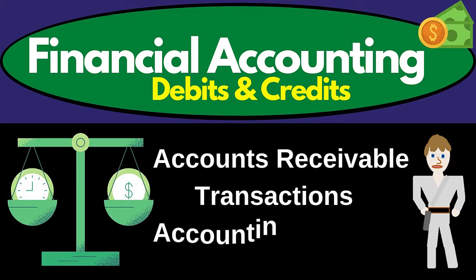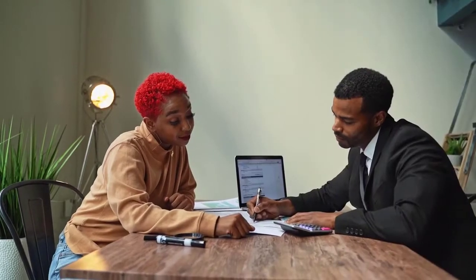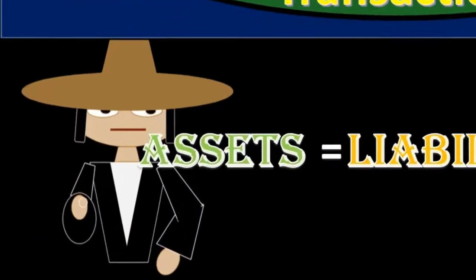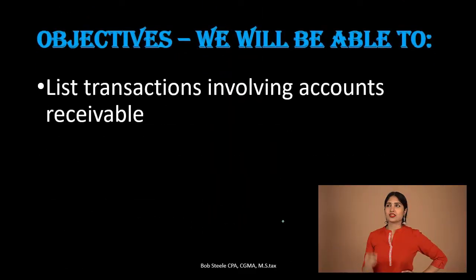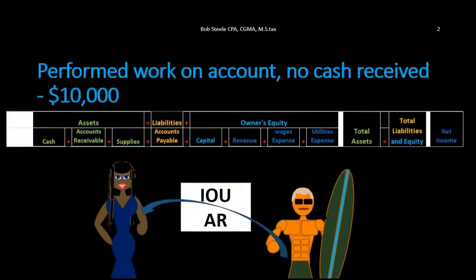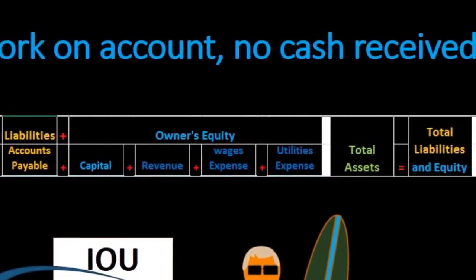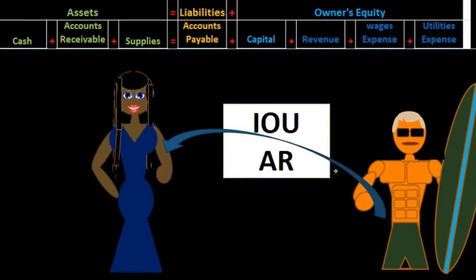In this presentation we will record transactions related to accounts receivable, using the double entry accounting system in the format of the accounting equation — assets equal liabilities plus equity. At the end of this, we will be able to list and record transactions involving accounts receivable using the accounting equation, and we will go through some examples.